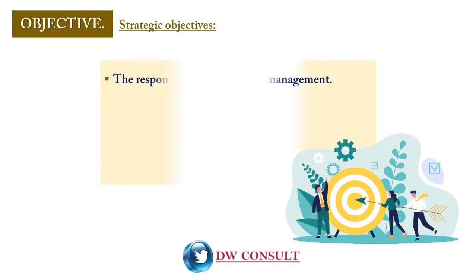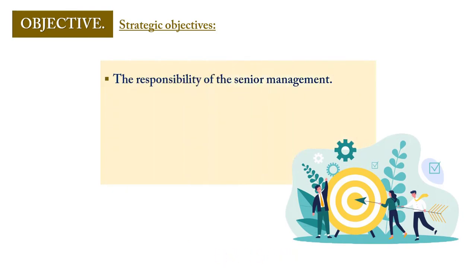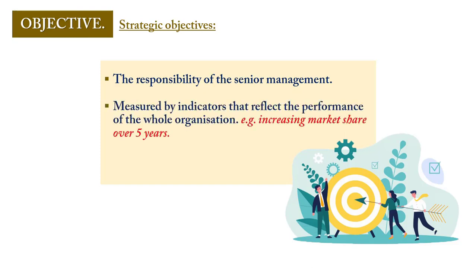Strategic objectives fall under the remit of senior managers — the CEO and those at board level — who set what the business is strategically to achieve. It covers the aim of the entire organization within a particular timeframe, and does not focus on an individual unit or department. For example, if the business wants to increase its market share over a five-year period, that requires all divisions working together. Strategic objectives are long-term in nature, covering what can be achieved over a five-year period.